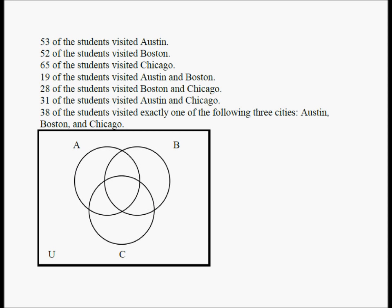We're going to solve this problem using a three-set Venn diagram. These are the facts from the question, and this is the Venn diagram. A stands for Austin Texas, B for Boston Massachusetts, and C for Chicago Illinois.